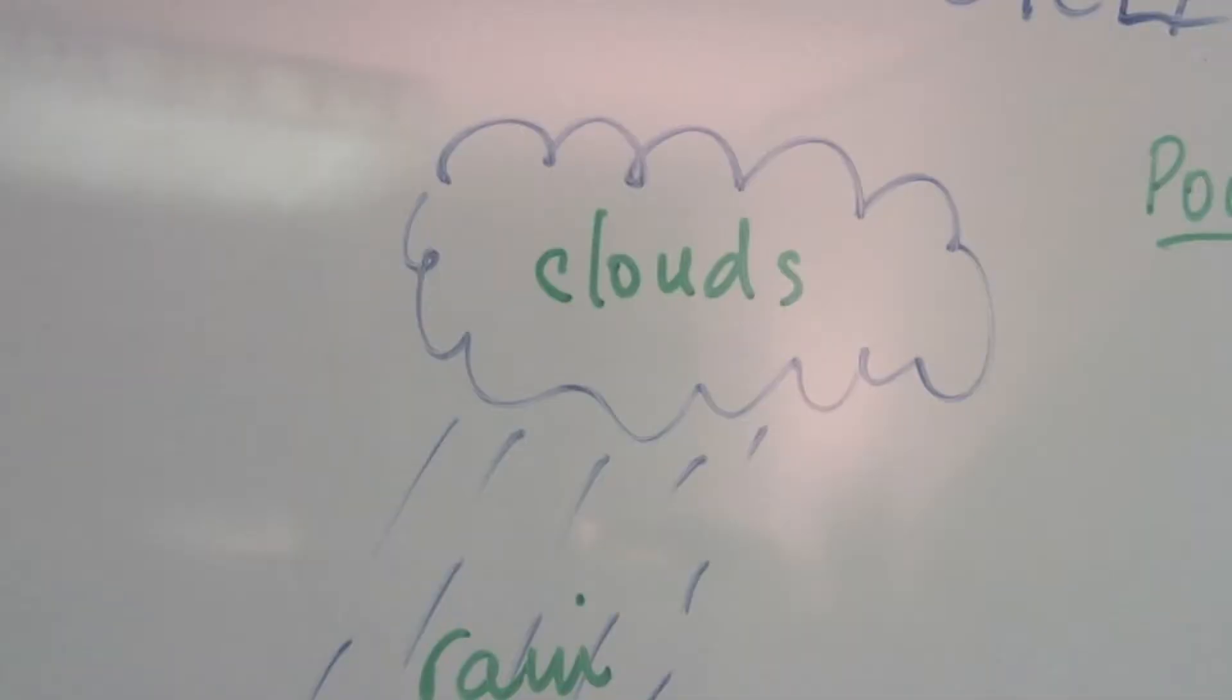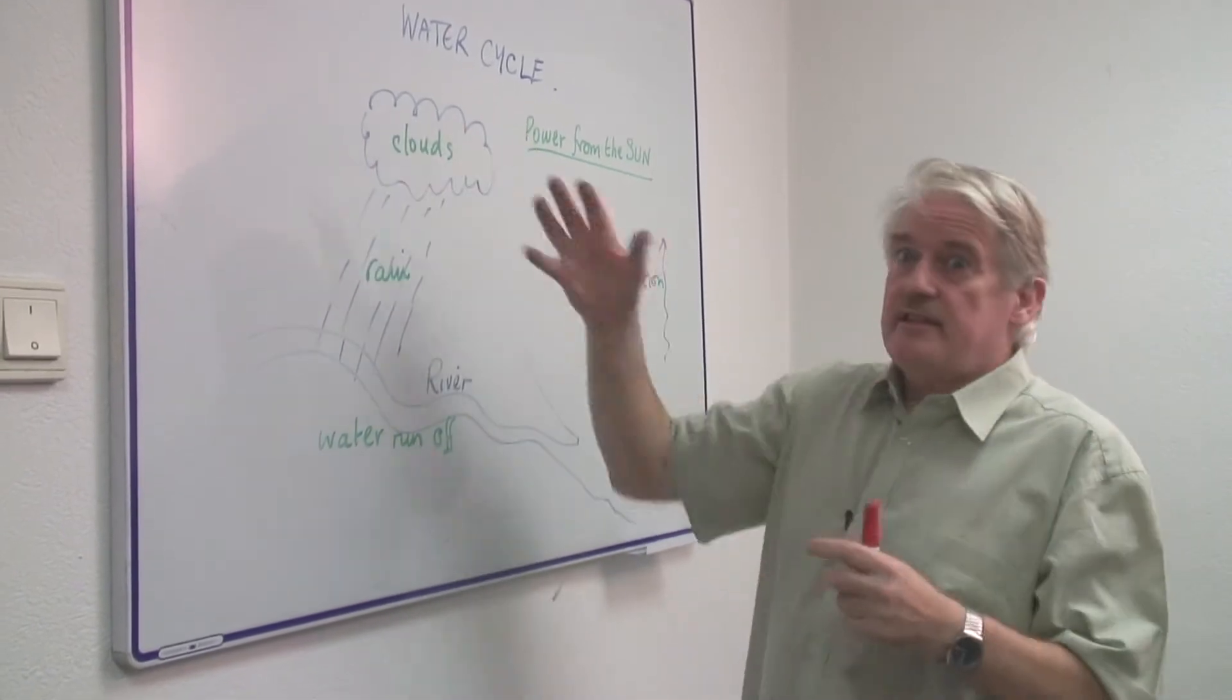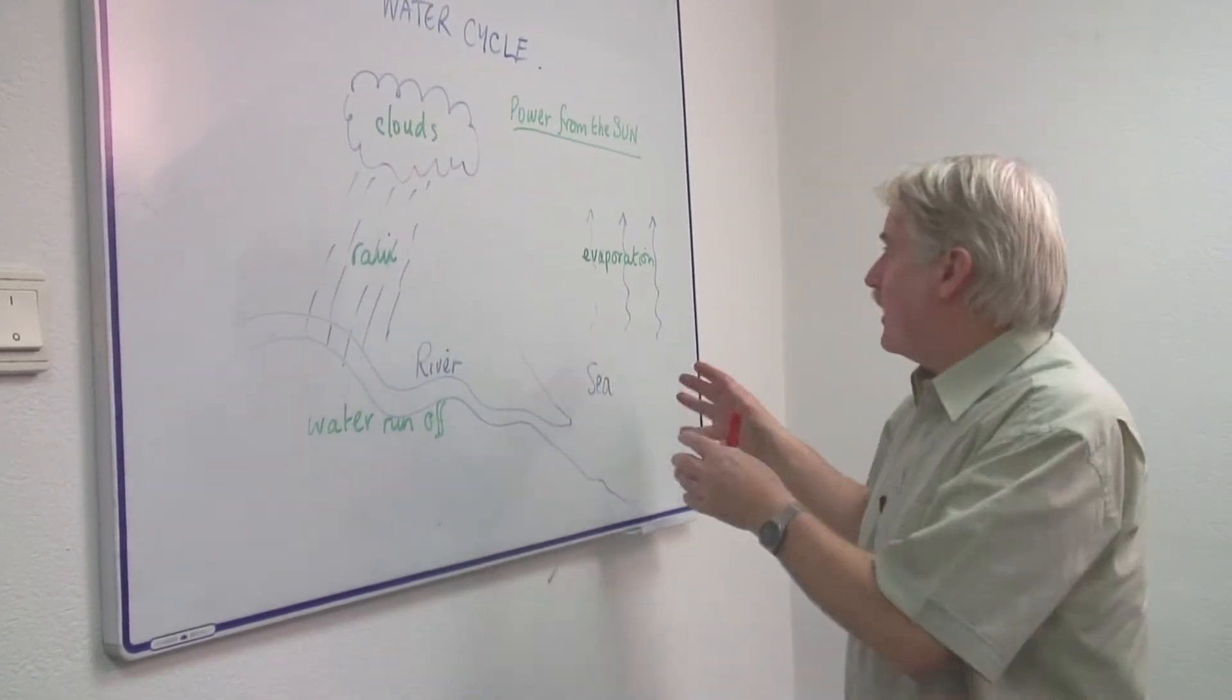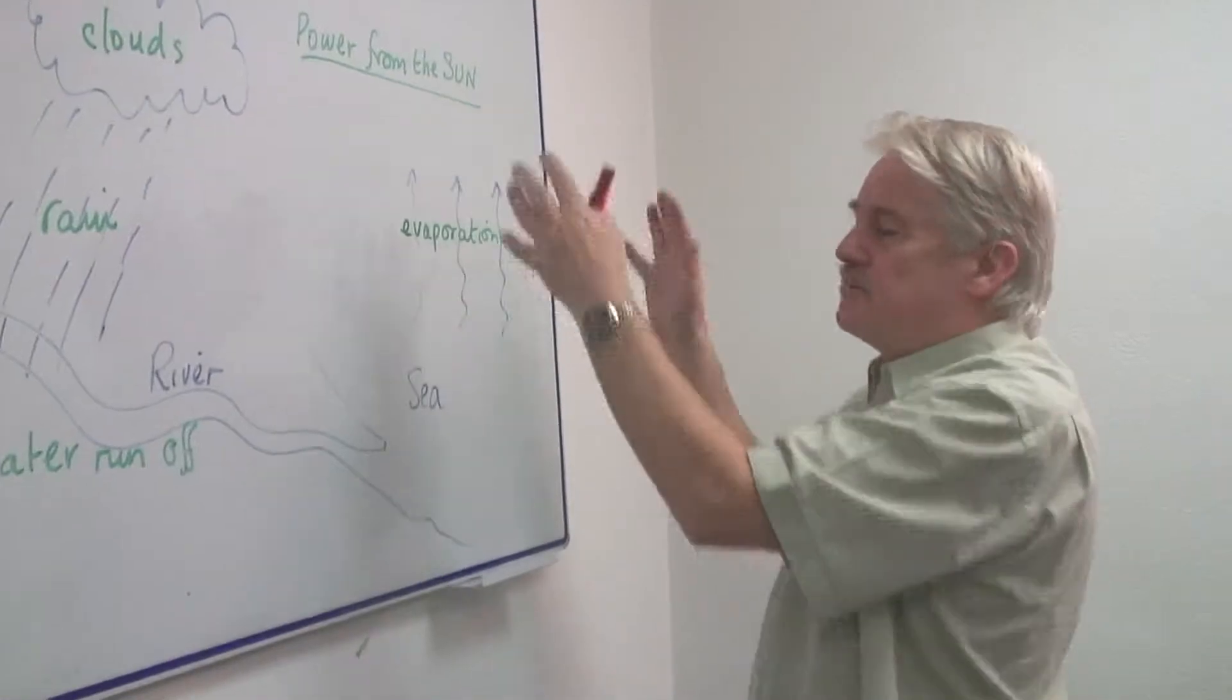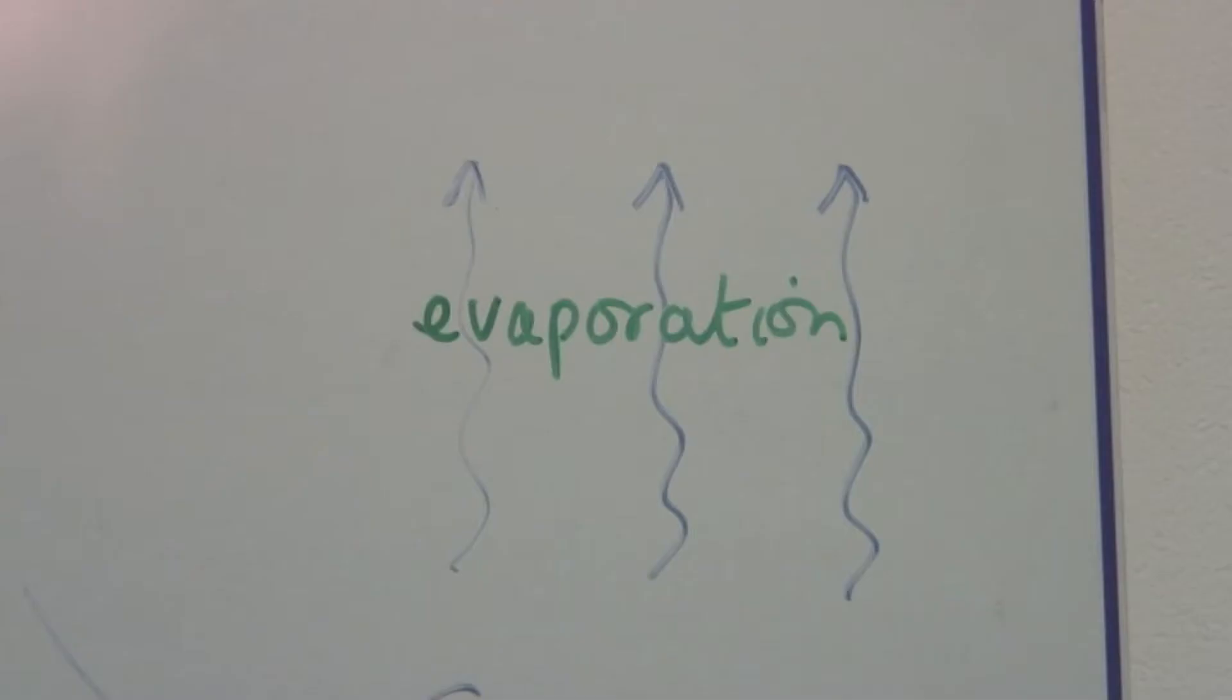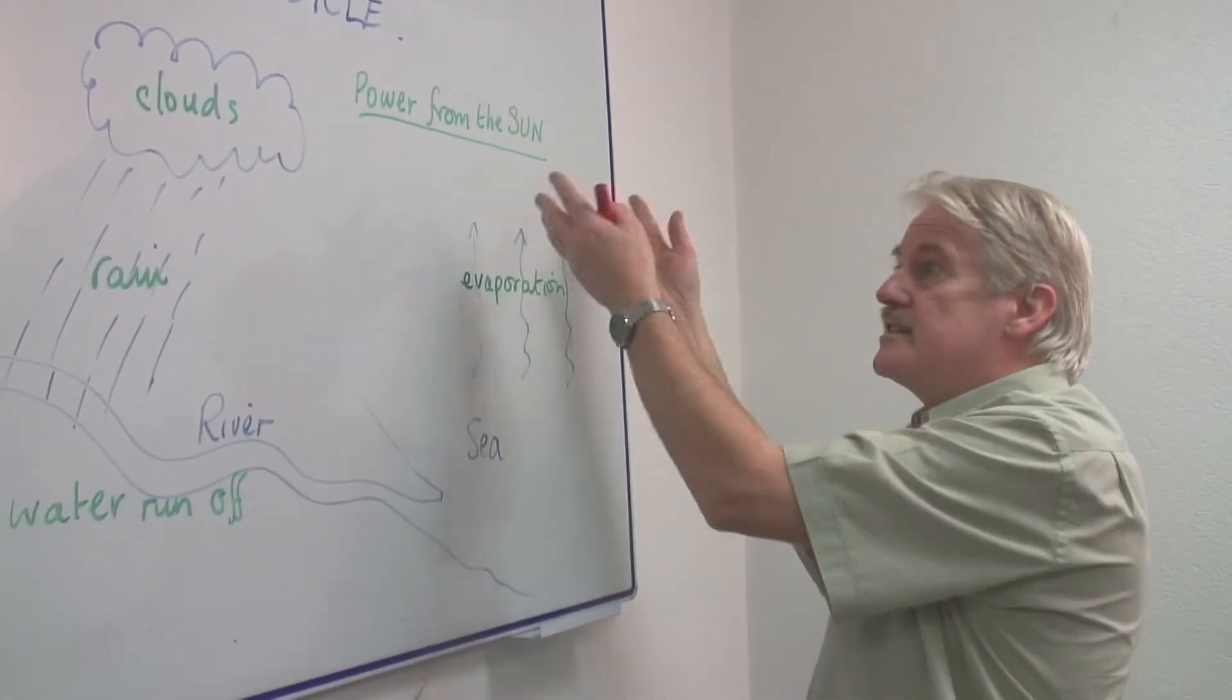The clouds are water vapor. And clouds in the sky are formed by the evaporation of water from the sea and from the land, but mainly from the sea. And this water is evaporated due to the power which come from the sun. The radiation from the sun causes this evaporation.